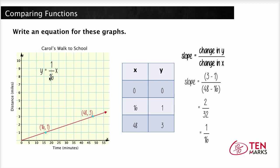This equation is y equals 1/16th x. Now this distance increases as time increases. So this is yet again an increasing graph. Since this graph is a straight line and the slope is constant, Carol is walking at a constant speed to school of 1/16th miles per minute.